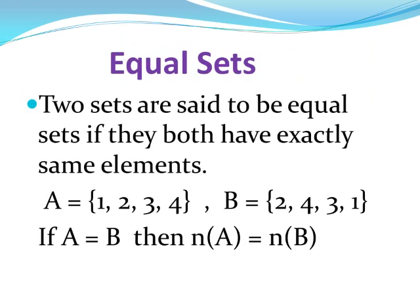Equal sets: Two sets are said to be equal sets if they both have exactly the same elements. For example, A = {1, 2, 3, 4} and B = {2, 4, 3, 1}. Their order is different but elements are the same. Two is in set A and also in set B. One is in set A and also in set B.